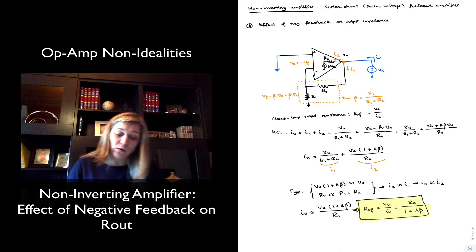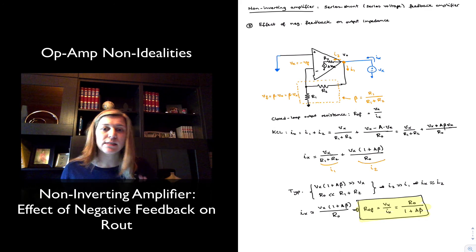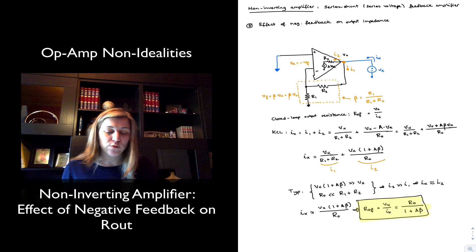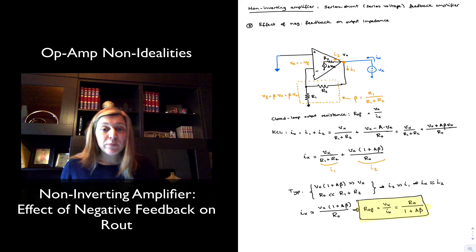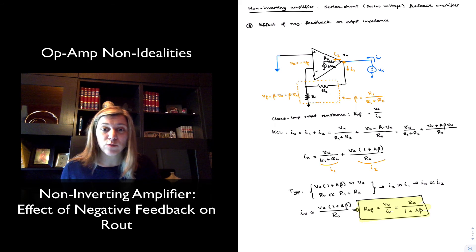And we could go ahead and calculate the effect on gain, input resistance, and output resistance for other types of feedback, for series series, shunt shunt, shunt series feedback. And we will see that it's not always the same. Typically, whenever we have something connected in series, that's going to tend to increase the resistance associated with that node. And something in shunt is going to tend to decrease the resistance associated with that node.